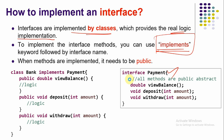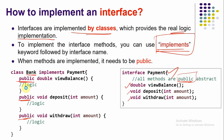For example, we can create a class called Bank that implements the Payment interface. This class wants to provide the implementation, so it must agree to provide all the logic for the listed abstract methods. When functions are declared inside an interface, by default all methods become public and abstract. When implementing those methods in the class, they must start with the public keyword, because we cannot reduce the accessibility level.